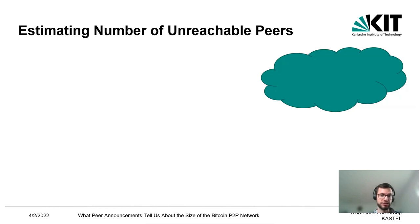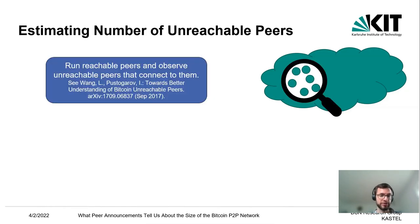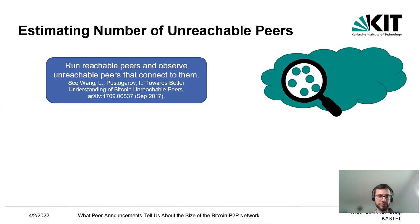Because we cannot measure the number of unreachable peers, we can only estimate their number. One approach is to run reachable peers and observe unreachable peers that connect to them. This gives us observations of a fraction of unreachable peers, but unfortunately it is unclear how to extrapolate from this observed fraction to the whole set of unreachable peers.